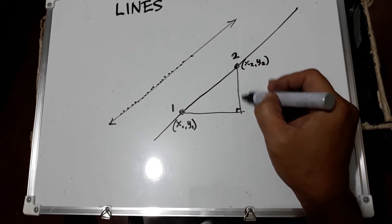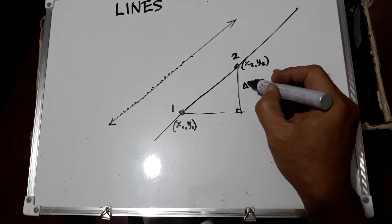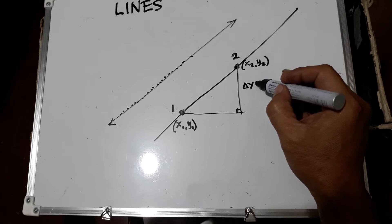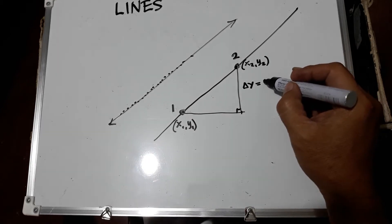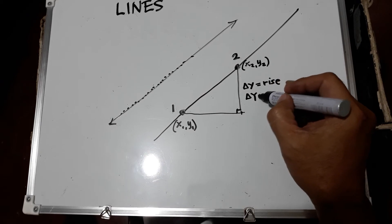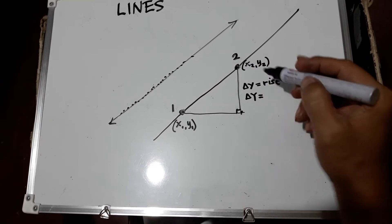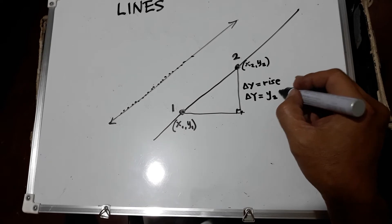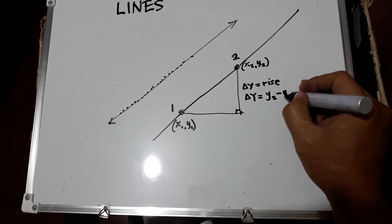So the distance here is delta y, which is also called rise, and delta y is equal to the difference between y sub 2 and y sub 1.